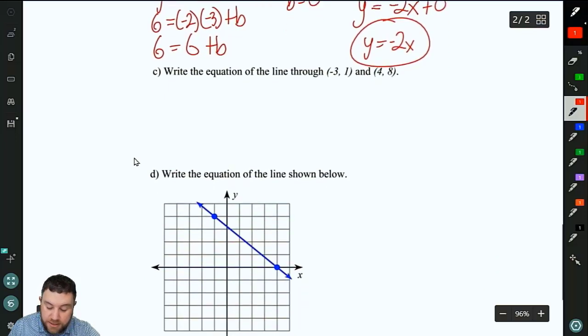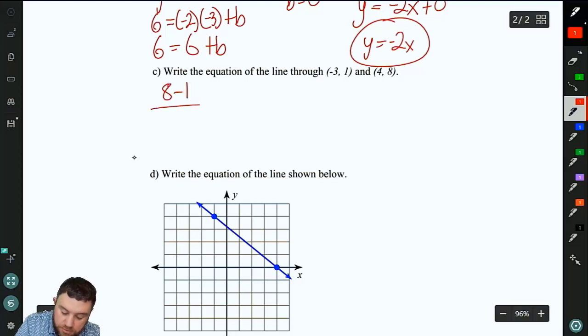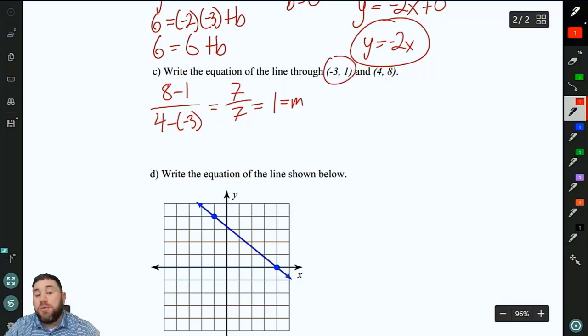For 3c, here we have two points. We need to find our slope and then do what we did in example b. So we've got 8 minus 1 over 4 minus negative 3. That will give us 7 over 7, which reduces to 1 as our slope. So I'm going to use the first point. It doesn't matter which one you use. You're going to get the same answer in the end.